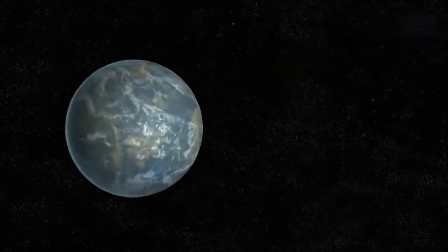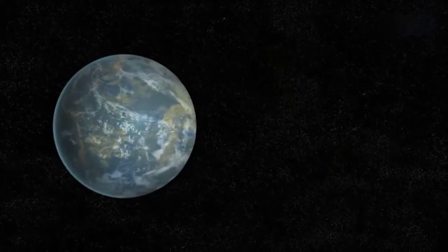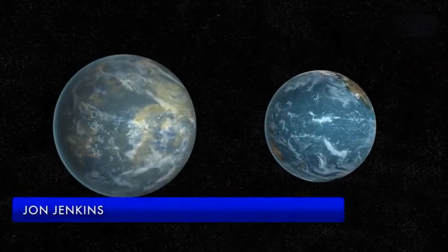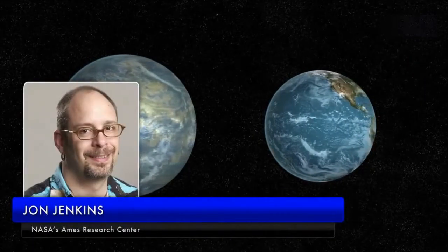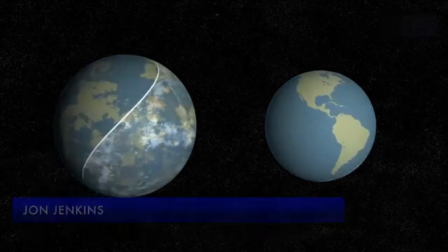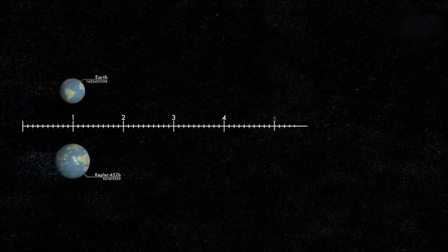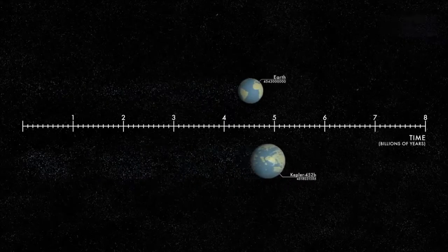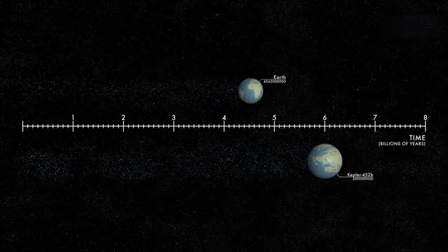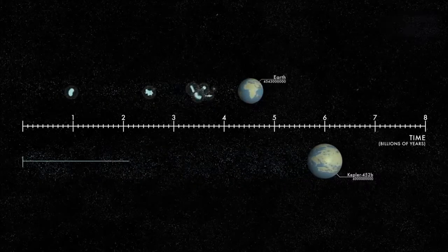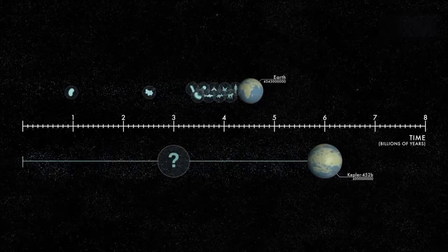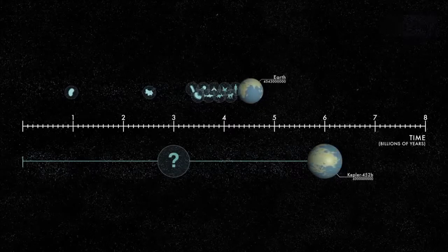We can think of Kepler-452b as an older, bigger cousin to Earth, says John Jenkins of NASA's Ames Research Center, who led the team that discovered Kepler-452b. It's awe-inspiring to consider that this planet has spent six billion years in the habitable zone of its star, longer than Earth. That's substantial opportunity for life to arise should all the necessary ingredients and conditions for life exist on this planet.